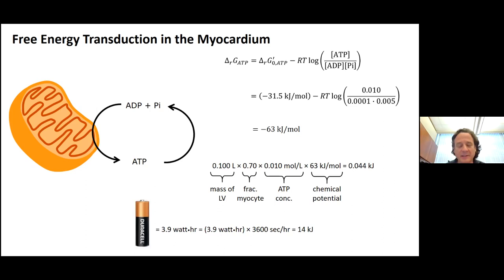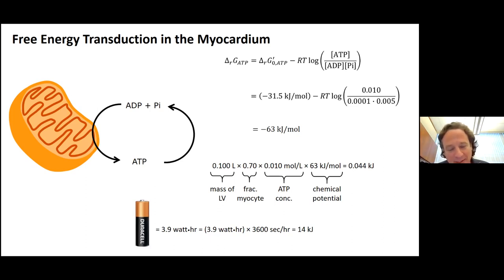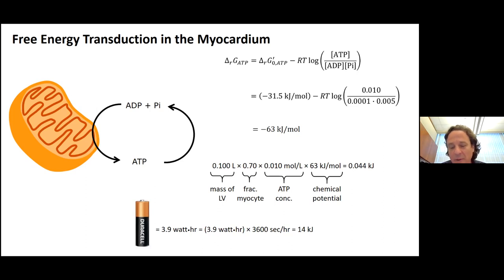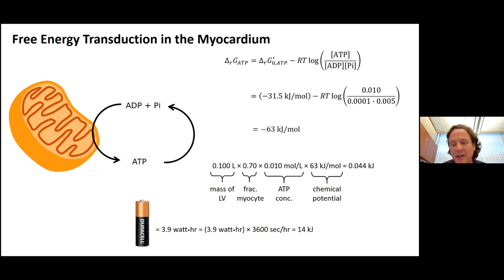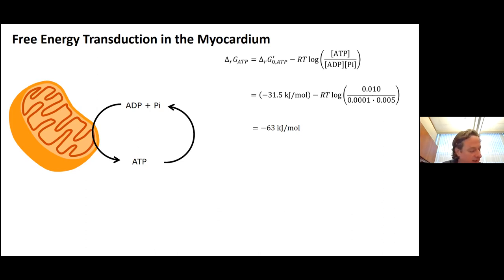You've seen a double-A battery. A double-A battery has about 3.9 watt-hours of energy. A watt is a joule per second, so 3.9 watt-hours times 3,600 seconds per hour gives 14,000 joules. There's orders of magnitude more energy in a double-A battery than there is ATP in your heart. But is that the right comparison to make?